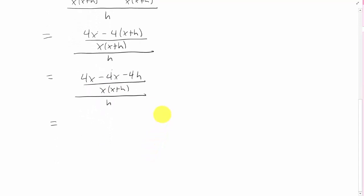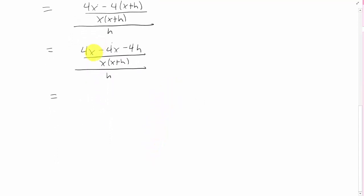Now, you'll notice we have a 4x minus another 4x up here in this term. Those can cancel, and we're now left with a single fraction here, a rational expression here, and an h in the denominator, which we can think of as h over 1.